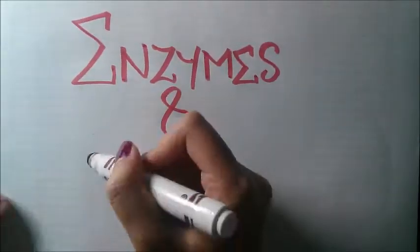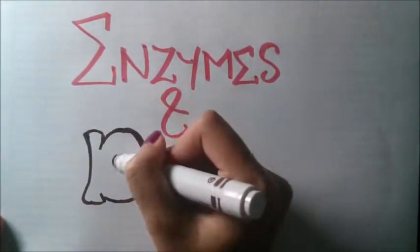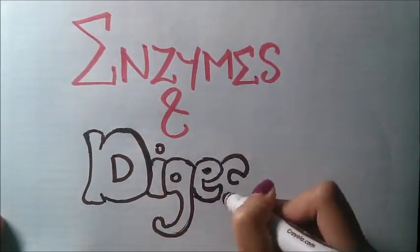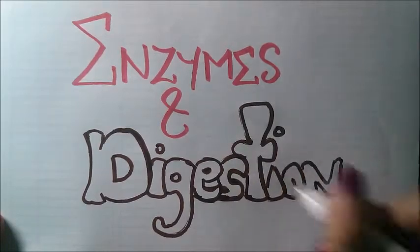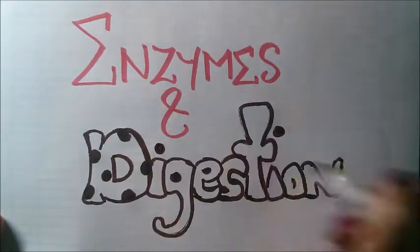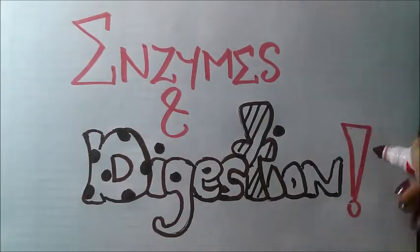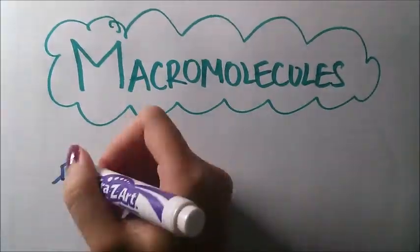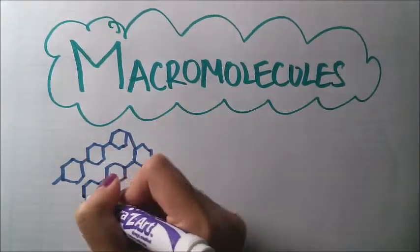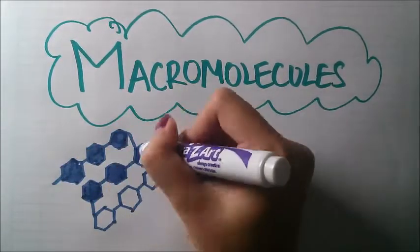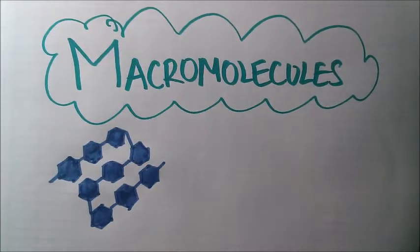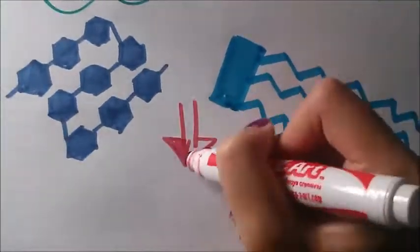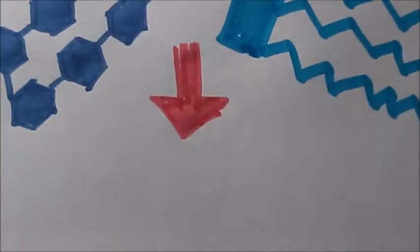The digestive system involves the intake of food, its digestion, absorption, assimilation, and elimination. Enzymes help achieve this process. They play a significant role in the digestive system by breaking down large macromolecules into micromolecules for our body to absorb the nutrients from our food into the bloodstream.